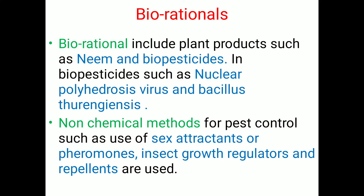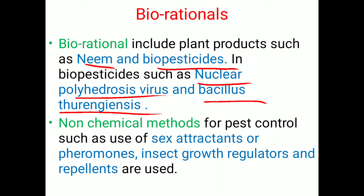Next is bio-rational. Bio-rational refers to products made from biological agents or plant products. For example, from neem, 5% neem seed kernel extract or 3% neem oil is prepared and used for the control of different pests and pathogens. Along with neem products, biopesticides are also used — for example, NPV, which is mostly used for the control of Helicoverpa armigera, and Bacillus thuringiensis (Bt), used for the control of bollworm complex commonly occurring on cotton. Along with these, insect growth regulators, repellents, and sex attractant pheromones are also used.